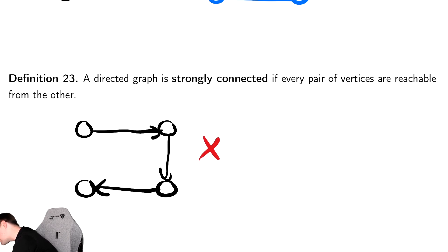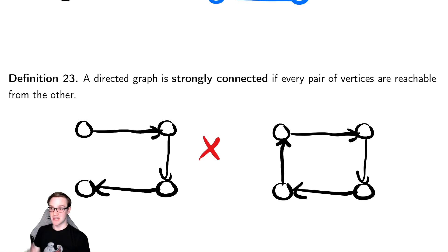However, if I take that same graph and add a single edge to it, so we copy it and paste it over here, and I add in an edge in the bottom left, which goes from the bottom left to the top left, I can now go from any vertex to any other vertex. This is a strongly connected graph because you can get from everywhere to everywhere. So this one is valid.